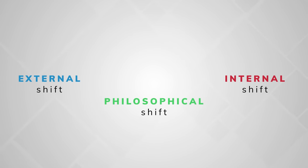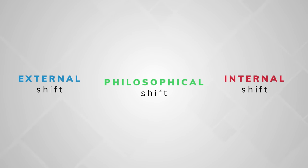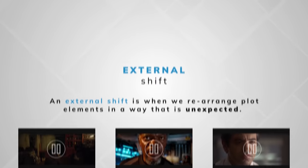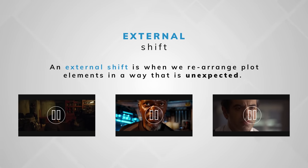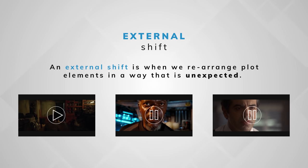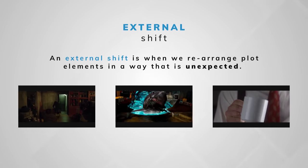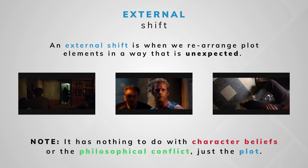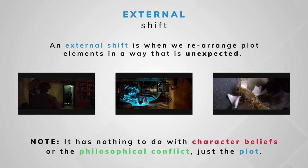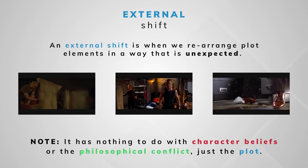For a meaningful twist, we need an external shift, an internal shift, and a philosophical shift. An external shift is when we rearrange plot elements in a way that is unexpected. These are surprises happening to external elements of the story, such as characters finding a hidden passage, someone suddenly dying, or an identity reveal. It has nothing to do with character beliefs or the philosophical conflict — just the plot.